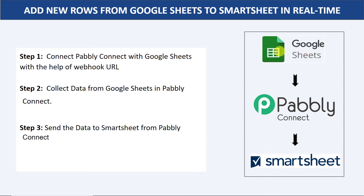After that, we make a test submission — we add details in Google Sheets and that data will arrive in Pably Connect. Once the data is collected in Pably Connect, we approach step 3: sending the same data to Smartsheet to create a new row. The importance of this workflow is you only have to create it once, and after that just sit back and relax — because once data is entered in Google Sheet, a new row will automatically be created in Smartsheet in real time.